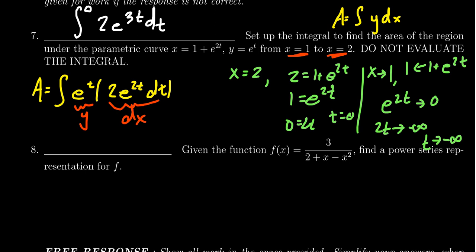So this integral is actually an improper integral in disguise. The lower bound is negative infinity. Our integral is from negative infinity to 0 of 2e^(3t) dt. Since this was meant just to set it up, if you left it factored as e^t times 2e^(2t) dt, that would be perfectly fine.